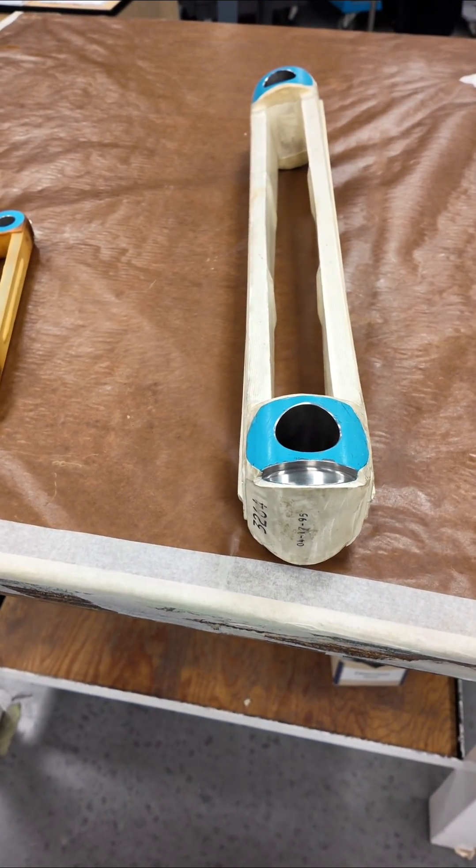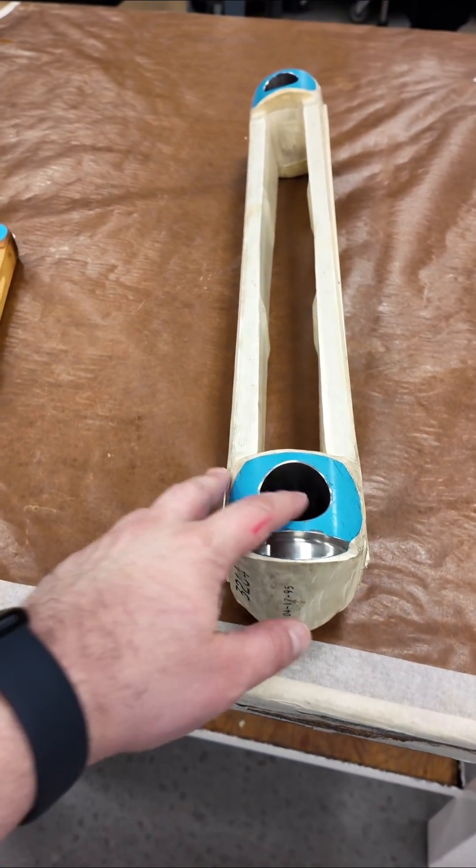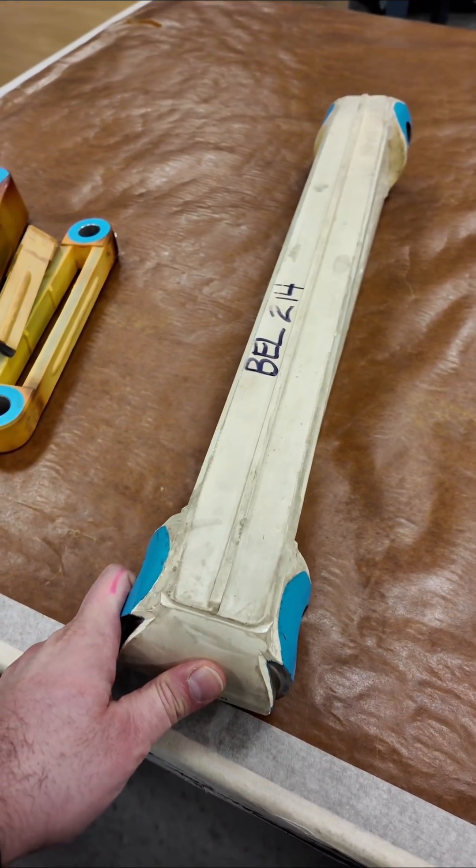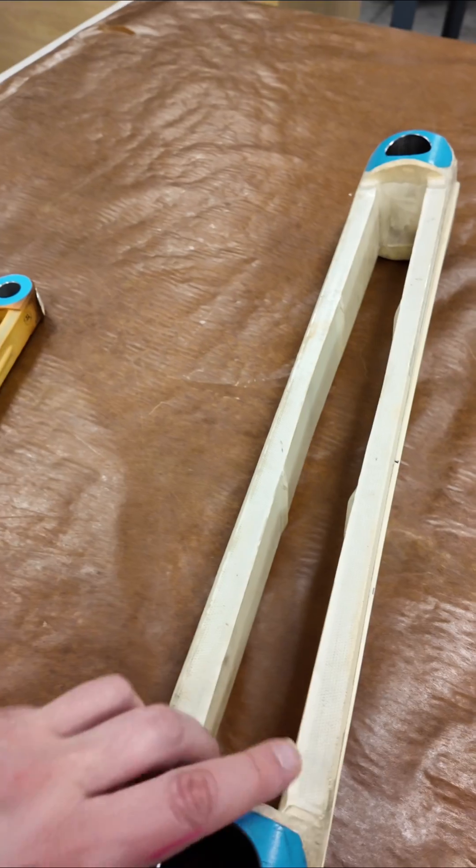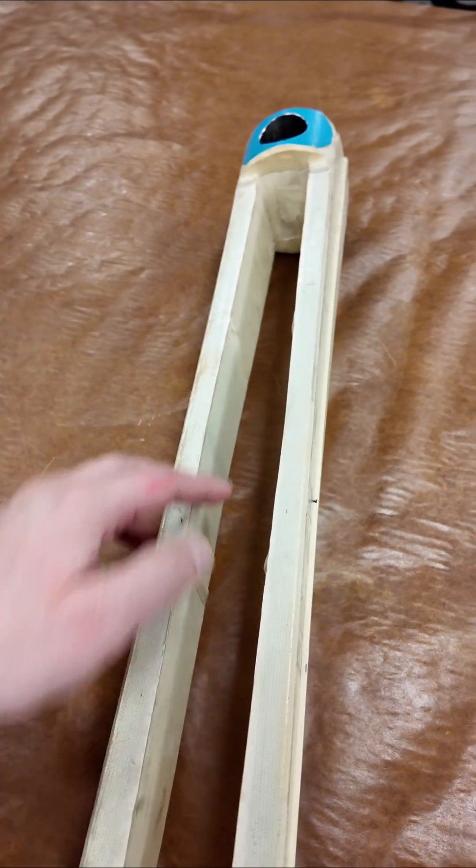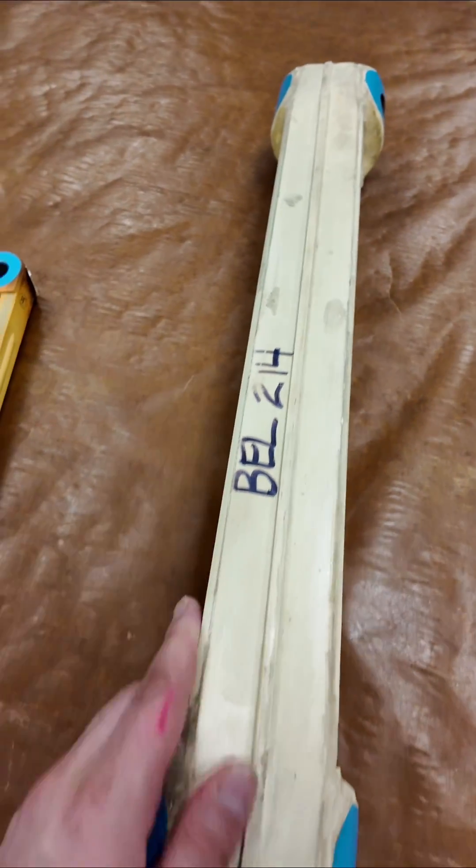The tension torsion strap for the Bell 214 ST, again, is even bigger, but it's the same design. You've got a steel bushing on each end with thousands of windings of that stainless steel wire encased in plastic.